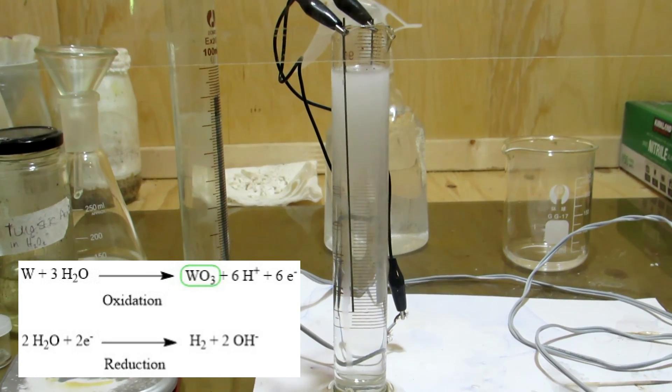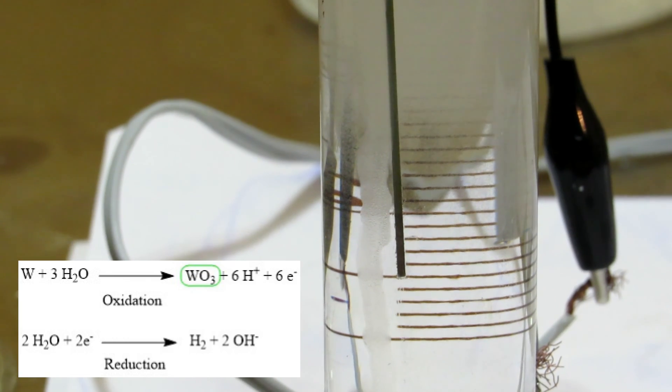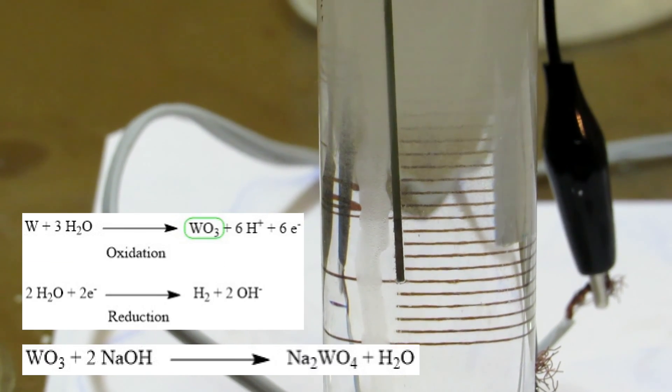The vigorous bubbling at the negative electrode is hydrogen gas, while the density different lines seen at the positive electrode are from sodium tungstate forming and diffusing away from the electrode.